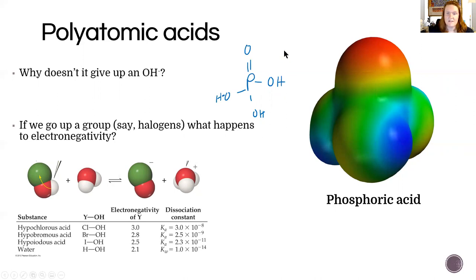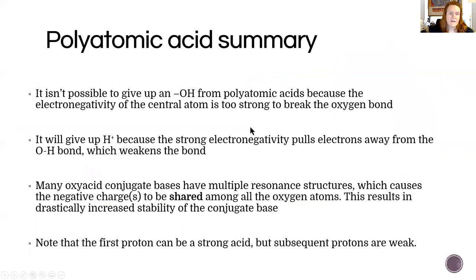It's also because H is very small, whereas P and O are pretty big, so you can have a lot of orbital overlap between these two. In summary, we can't take an OH away from the polyatomic acids because the electronegativity of the center atom is too strong. That connection between P and O, or S and O, is too strong to break it, so instead the H+ breaks off. When that happens, you get a lot of resonance structures and that stabilizes the conjugate acid.